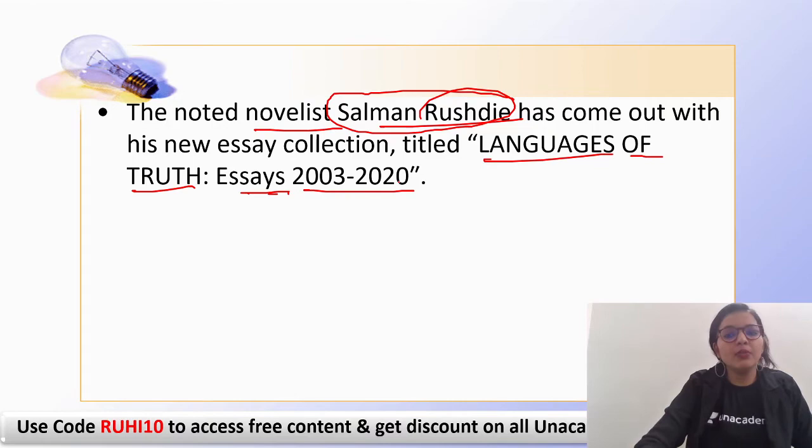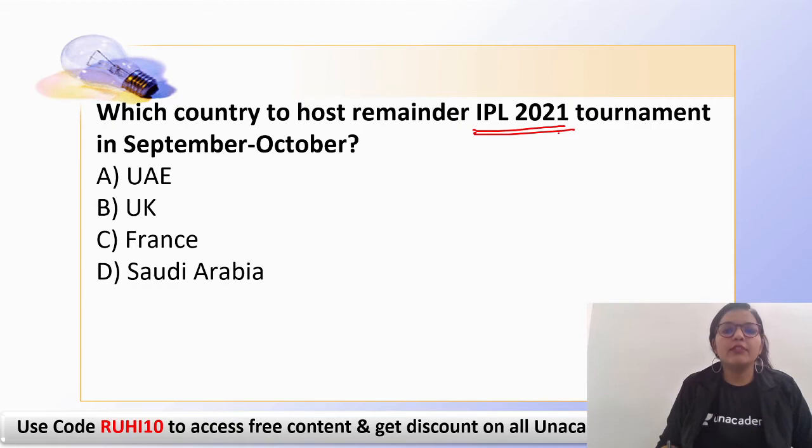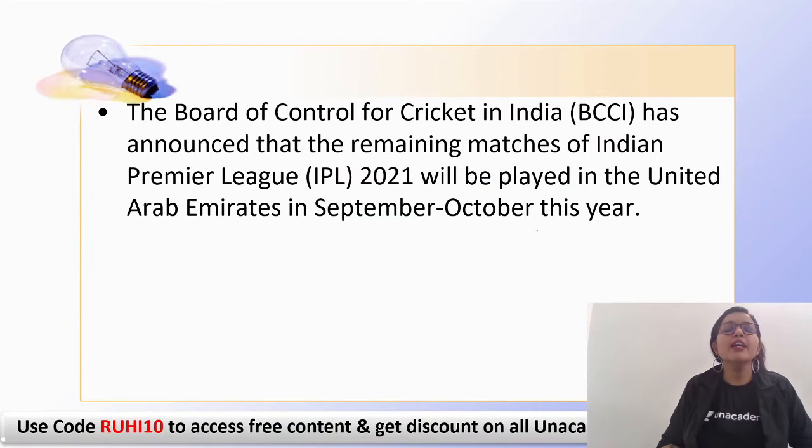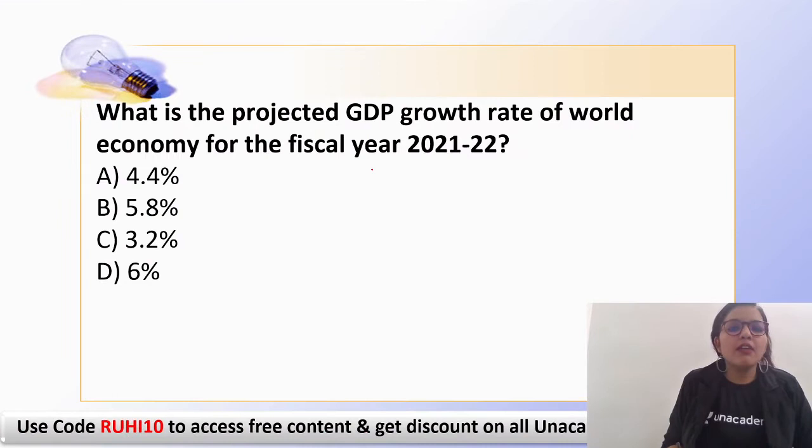The next question: which country will host the remaining IPL 2021 tournament in September–October? The host country is the United Arab Emirates (UAE). This announcement was made by the BCCI — the Board of Control for Cricket in India. UAE will host the IPL in September–October this year.